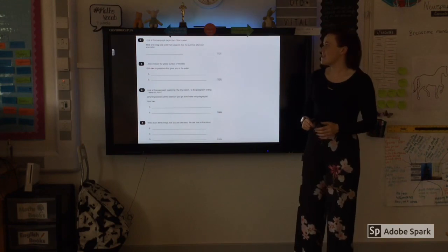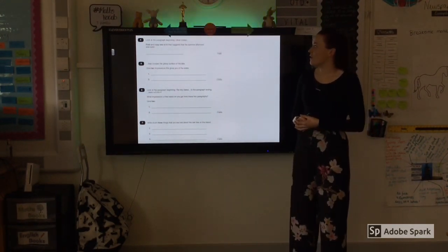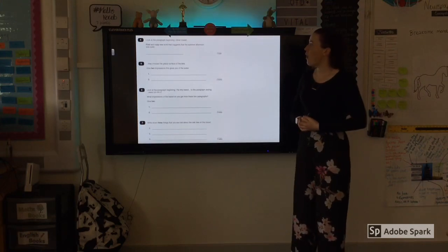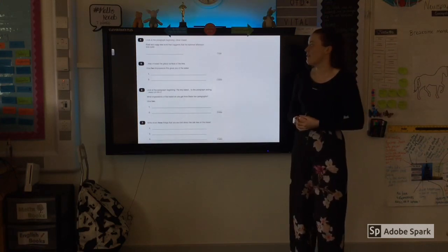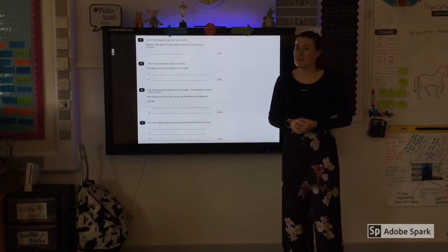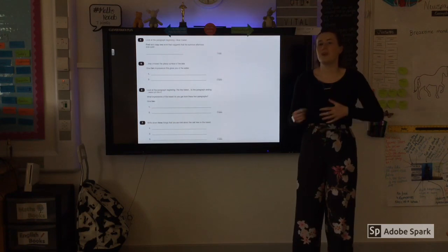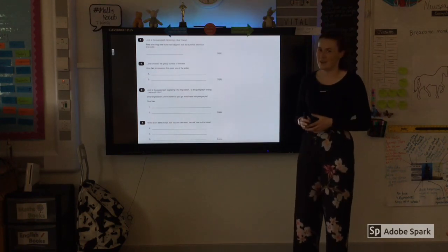So looking at the next set of questions then. Number four. Look at the paragraph beginning Oliver wrote. Find and copy one word that suggests that the summer afternoon was quiet. Now the biggest thing that my year sixes will fall into the trap of is copying more than one word. You only literally need to go into the text to find the one word and place it into your answer.